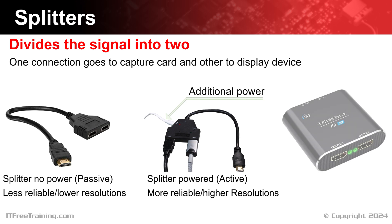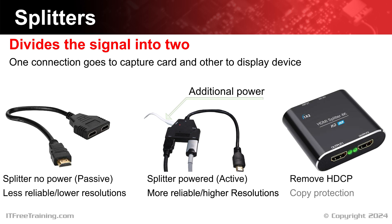Some splitters have the ability to remove HDCP from the signal — in other words, remove the copy protection. So if your video capture card does not support copy protection, purchasing one of these splitters may be the solution. Keep in mind the law regarding the use of these devices. Using them to live stream a game may be legal in your country; however, using it to copy movies would be illegal. If in doubt, see if disabling the copy protection is available rather than using a device like this.